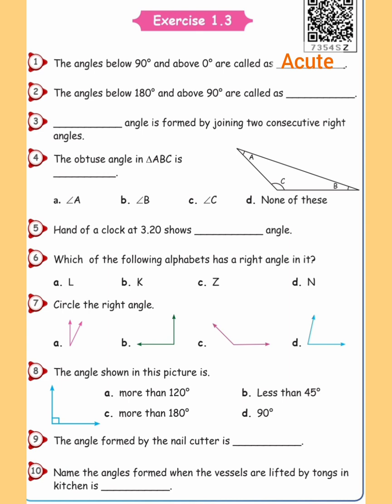Second question: angles below 180 degrees and above 90 degrees are called as — blank. The answer is obtuse angle. Third question: a blank angle is formed by joining two consecutive right angles. The answer is straight angle.